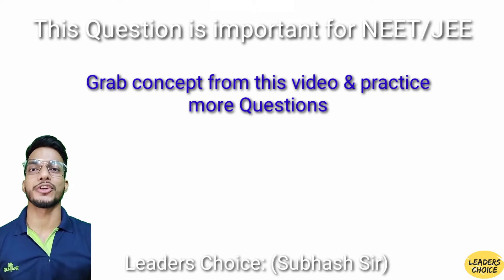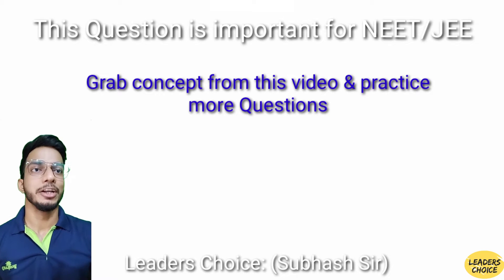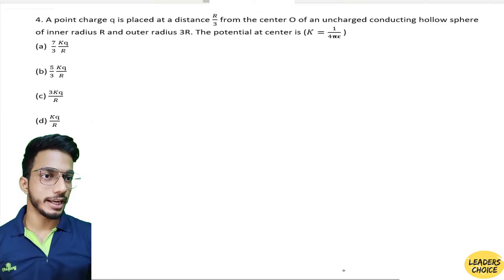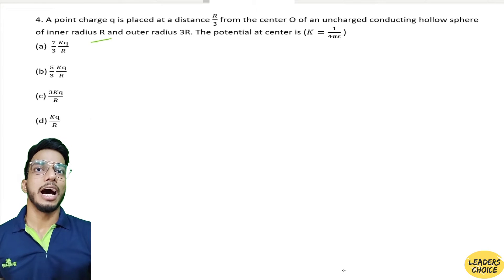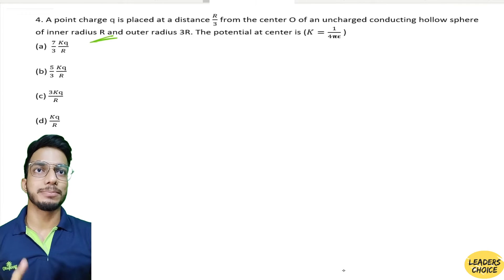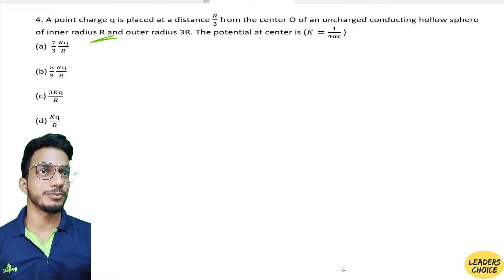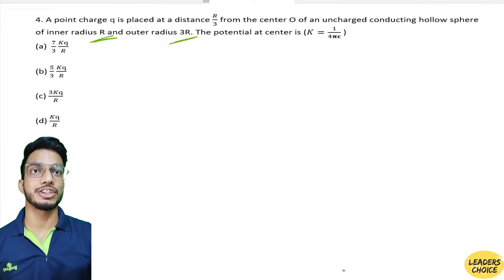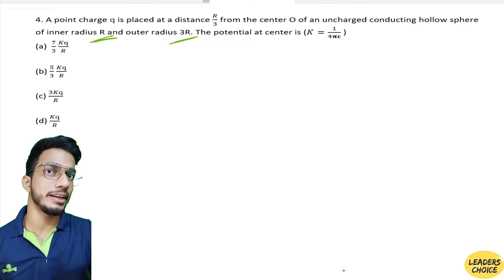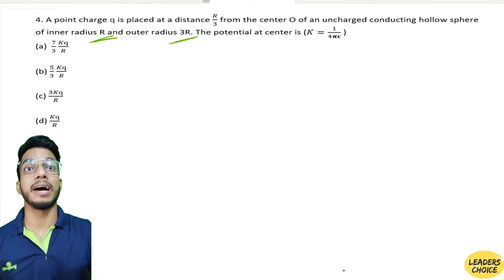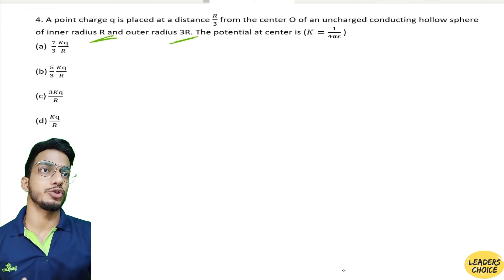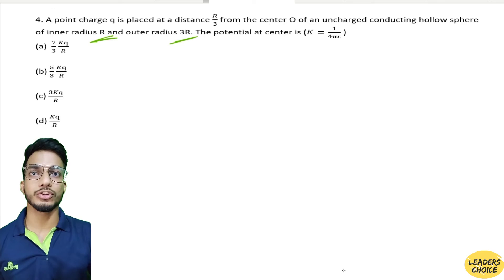This is the fourth mind booster question which I gave you in the last video as a challenge. The question is on your screen. A point charge q is placed at a distance of r/3 from the center O of an uncharged conducting hollow sphere of inner radius r and outer radius 3r. The potential at the center is asked.